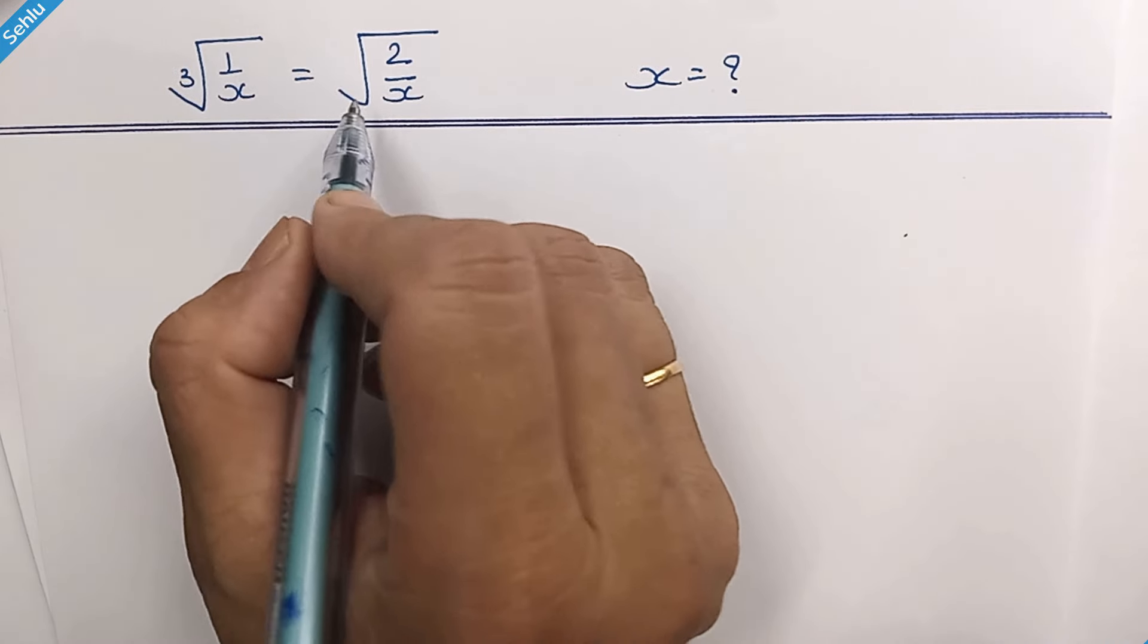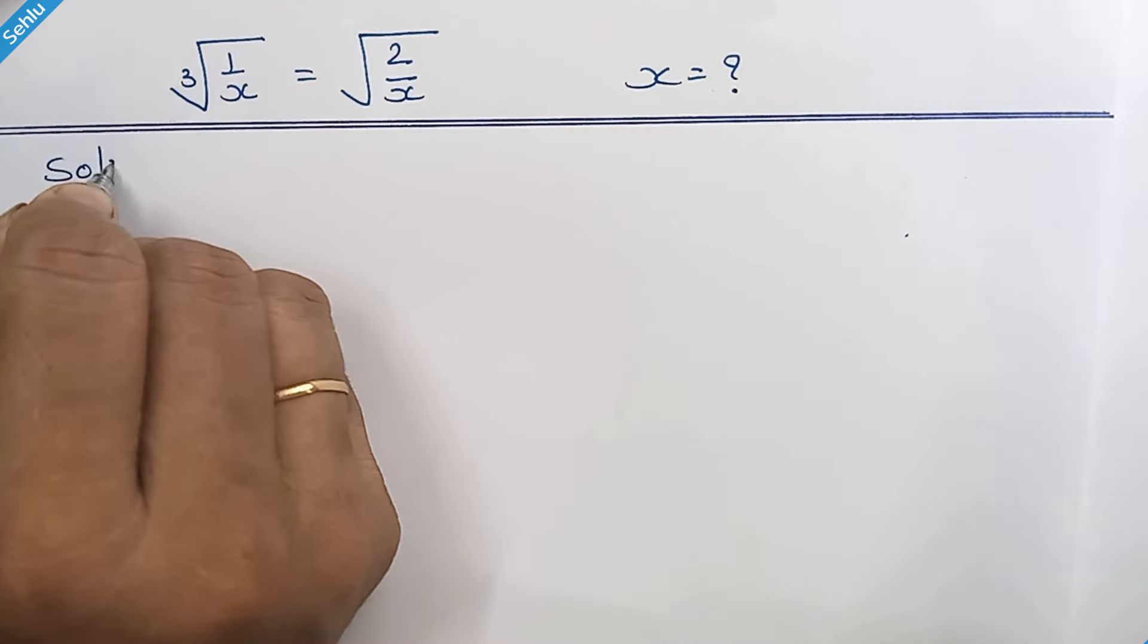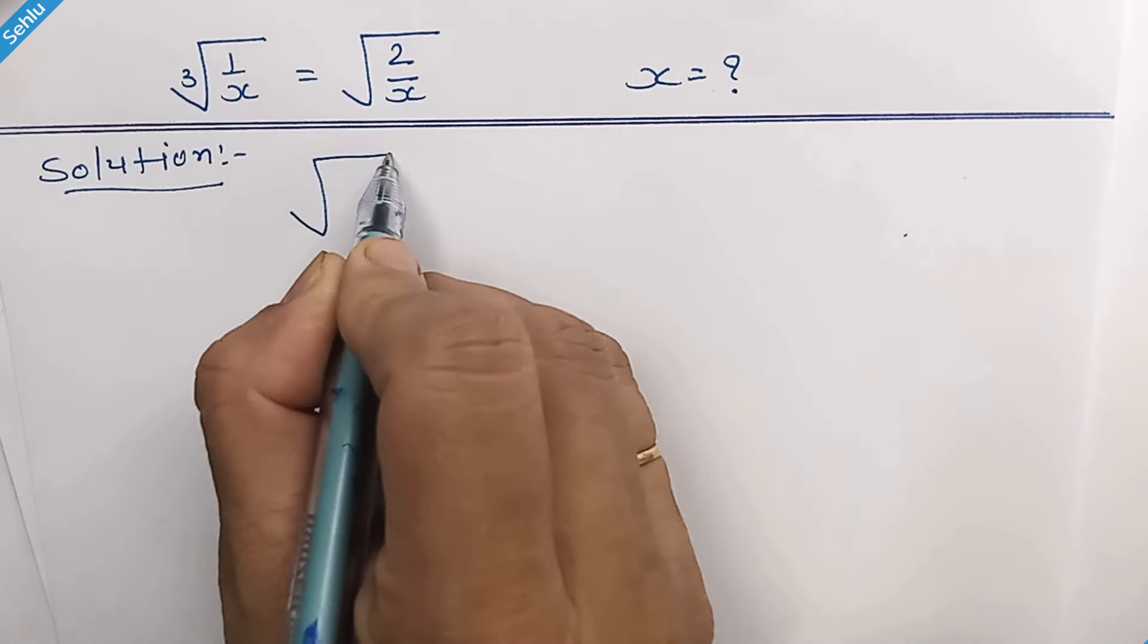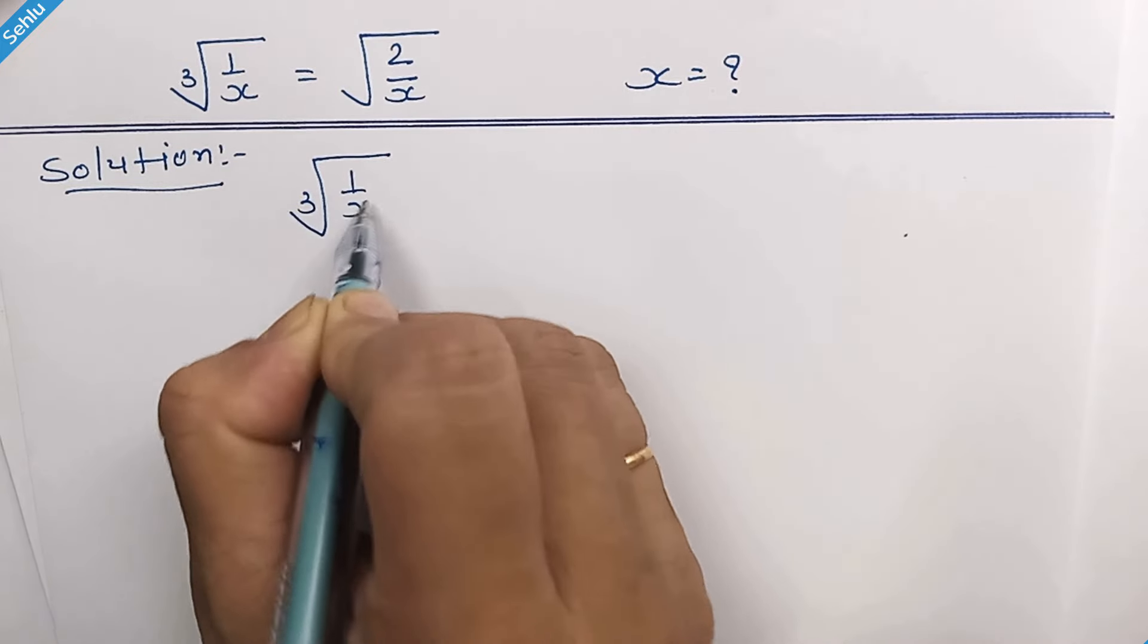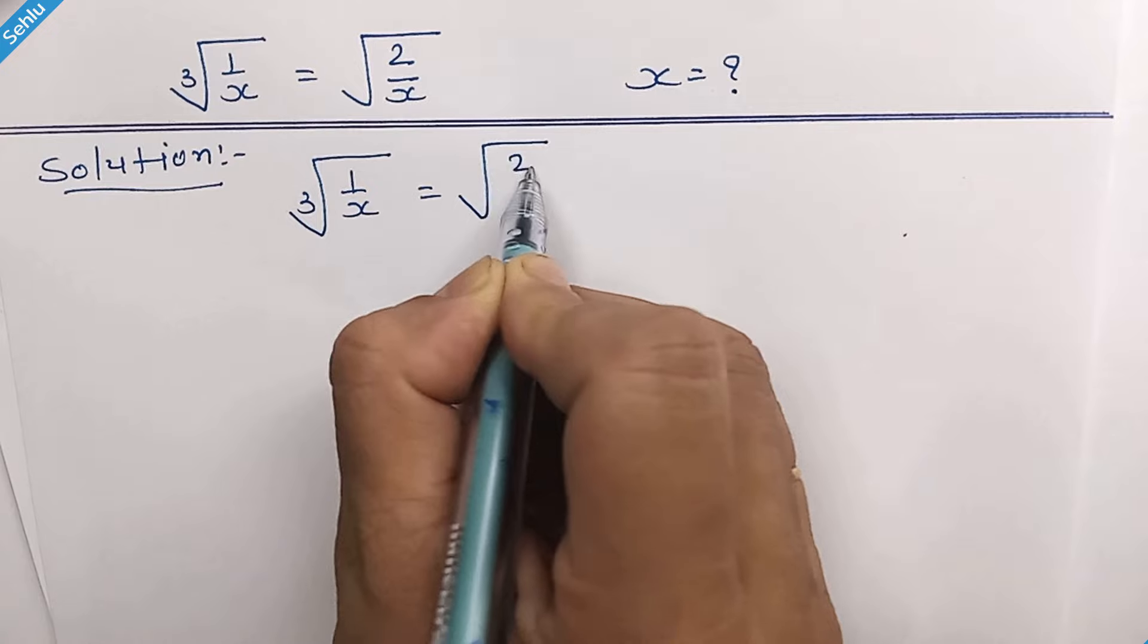Hello friends, this is our question and we have to find the value of x. So let's start. The question is cube root of 1 over x is equal to square root of 2 over x.